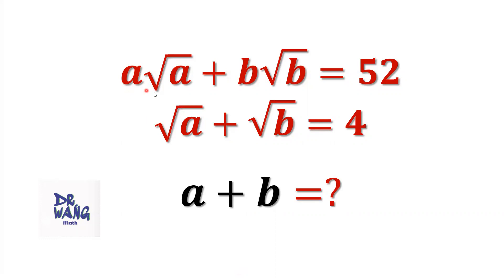Here is the question. If a times square root of a plus b times square root of b equals 52, square root of a plus square root of b equals 4, what is the value of a plus b?